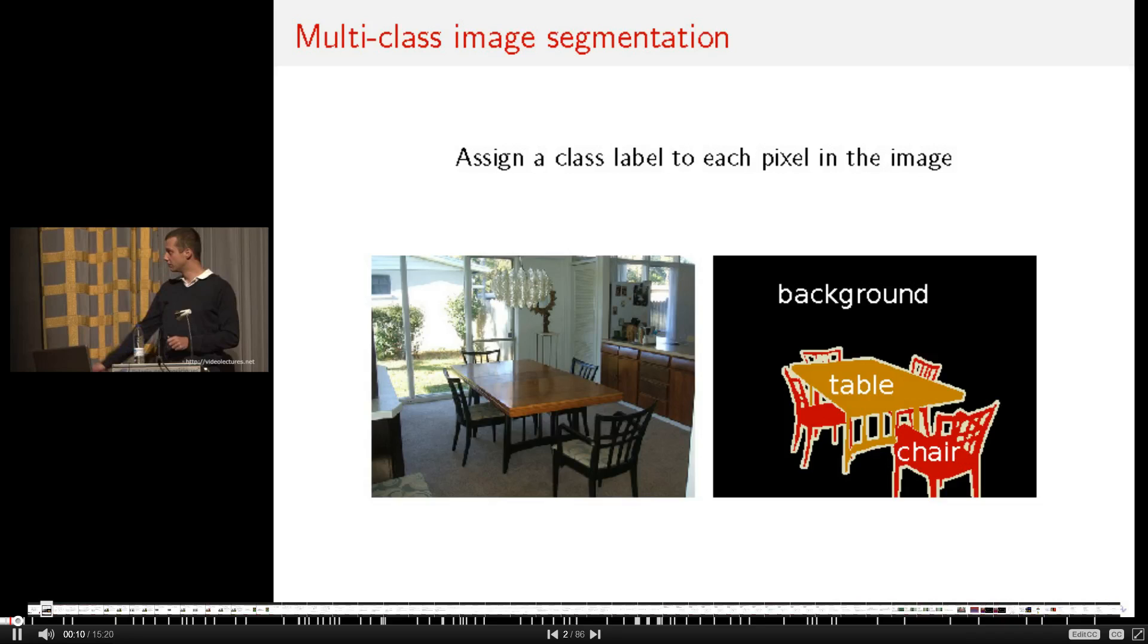This is why the CRF also contains a pairwise term, which encourages a consistent labeling over an image. In the most simple CRF model, a pairwise term is only formulated over directly neighboring pixels. Most commonly used is the color-sensitive Potts model, which you can see on the bottom of the slide, and it expresses our belief that close-by pixels or neighboring pixels with the same color or with a similar color should be labeled the same.